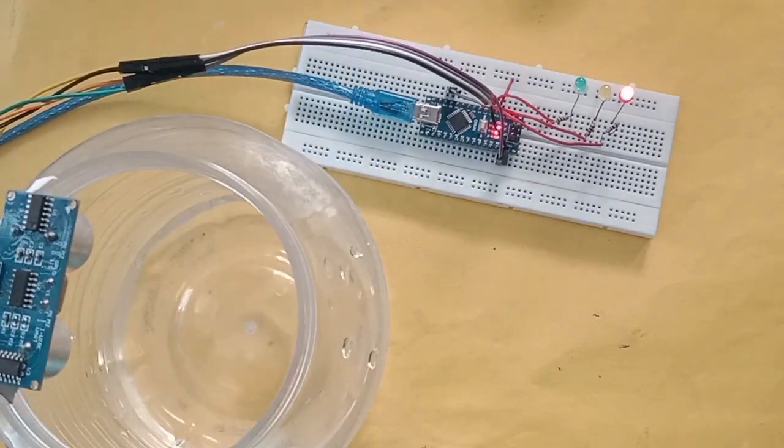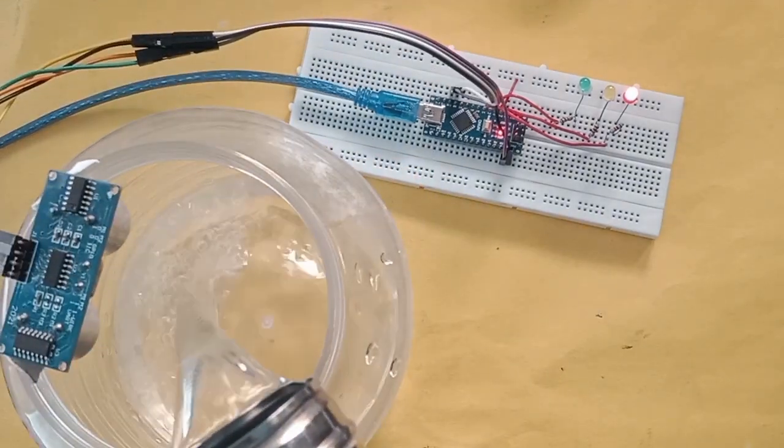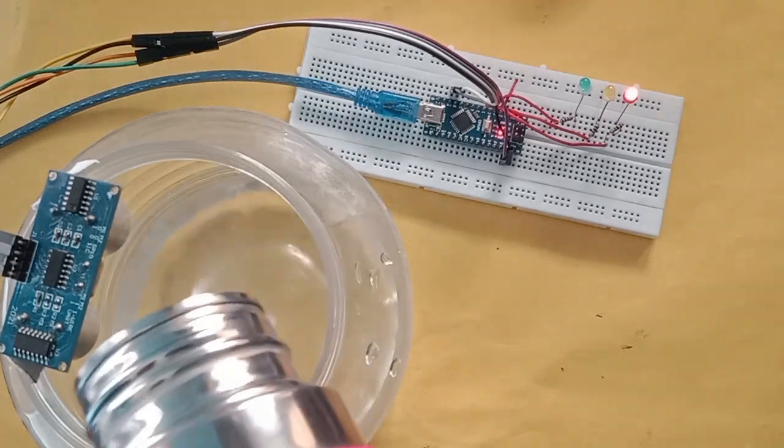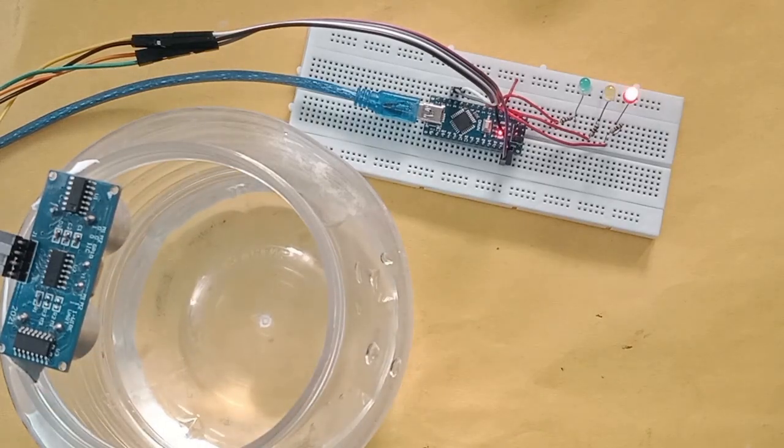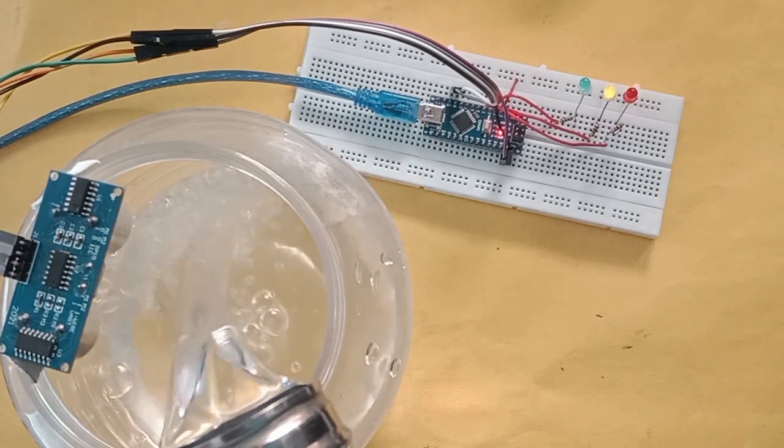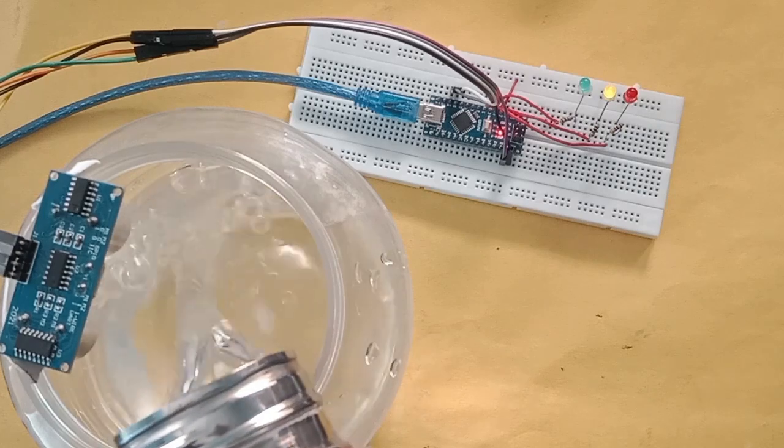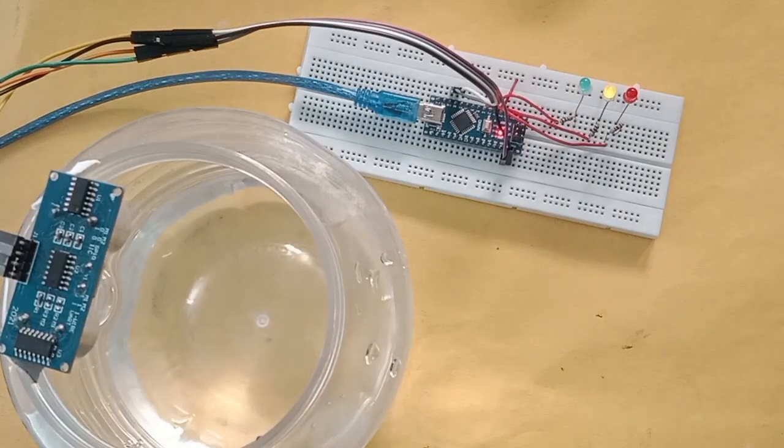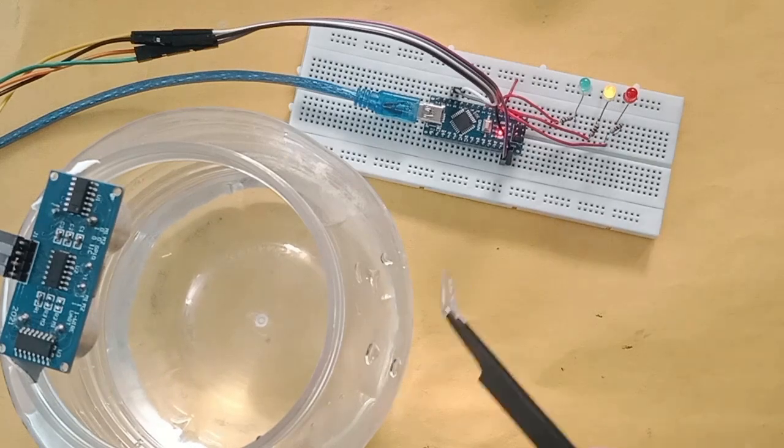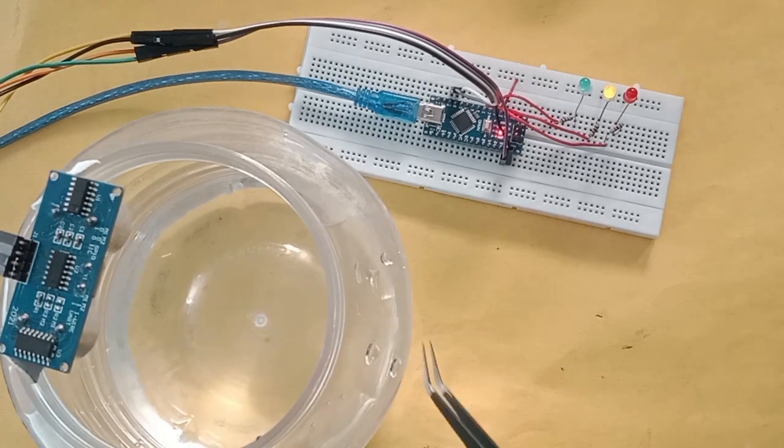Let me give a quick demo before we build the project. If the water is less than 30% in the container, red LED will glow. If the water is above 30% and below 70%, yellow LED will glow. And if the water in the container is more than 70%, then green LED will glow.